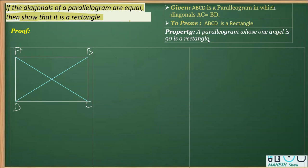So for that, we are going to use congruency. What we'll do is we'll consider triangle ADC and the other triangle, triangle BCD. So what you can see here,